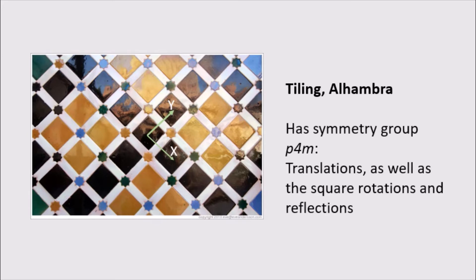Now wallpaper groups have to have the two translational symmetries to be called a wallpaper group, but that doesn't mean that they're restricted to only those symmetries. For example, from this tiling from the Alhambra, we have the translational symmetries as seen by the x and y. But also notice that every individual cell is a square, and squares also have symmetries themselves. So in fact, the Alhambra tiling not only has the translational symmetries, but also has the eight square symmetries, so the four rotations and four reflections.